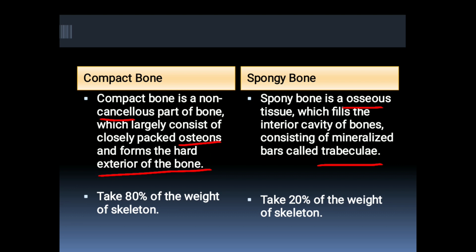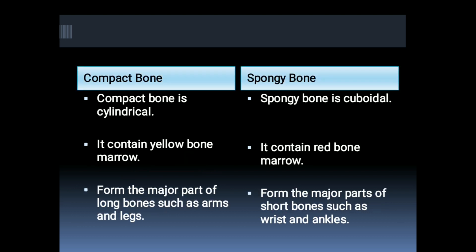Compact bone accounts for 80 percent of the weight of the skeleton, while spongy bone accounts for 20 percent. Compact bone is cylindrical in shape while spongy bone is cuboidal.